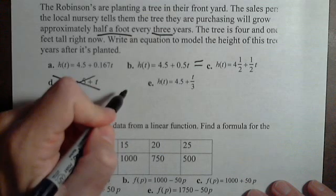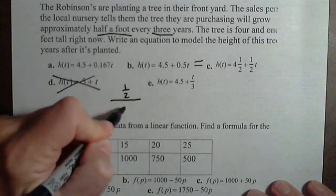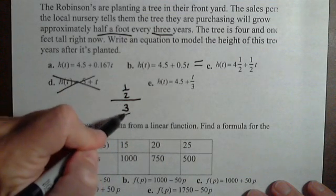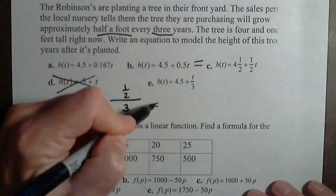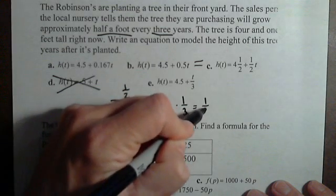So if we think about calculating our slope, it's our change in output, so it grows one half foot every three years. So our slope is actually one half times the reciprocal, one third, or one sixth.